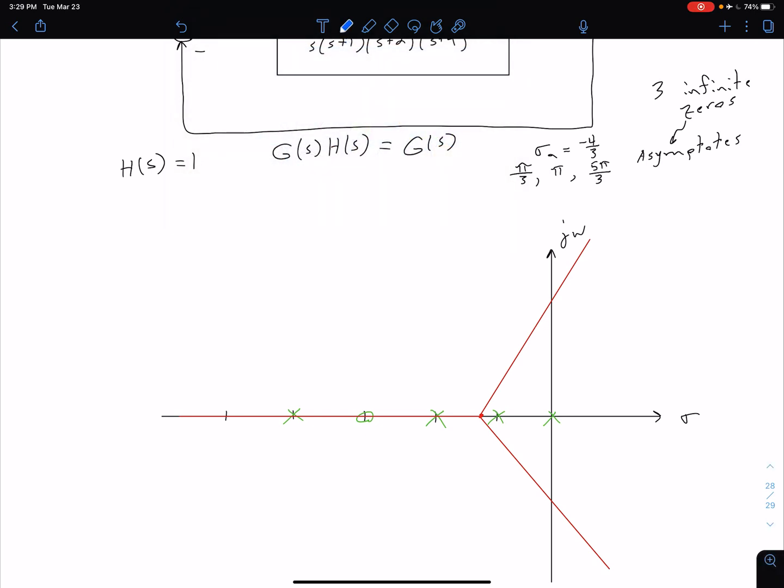The next piece of information we want to put on here is our root locus just on the plot. Using the rules, what I can see is I'm going to be on the real axis here, and I'm going to be on the real axis here, and I'm going to be on the real axis to the left of this final pole. In terms of direction, we can see in this middle set, it's going to be starting at this pole and ending at this zero. We have this branch starting at this pole and going towards negative infinity. And then we have these two going towards each other, and then there's going to be a breakaway point, and they're going to approach those two asymptotes.